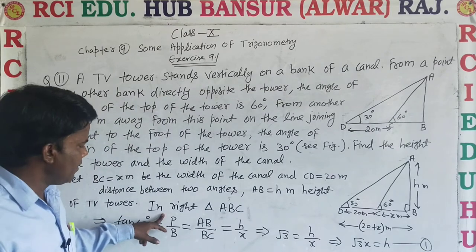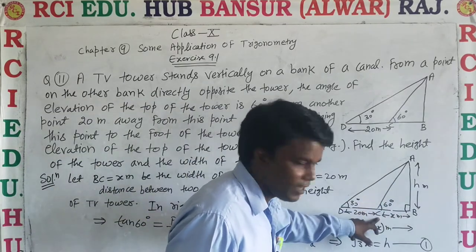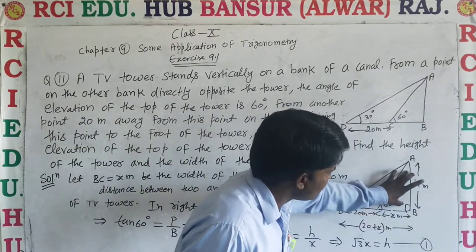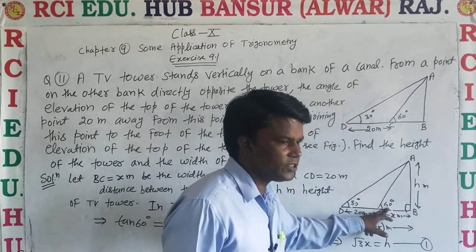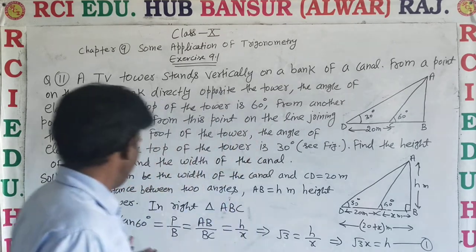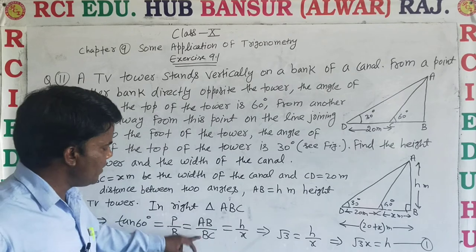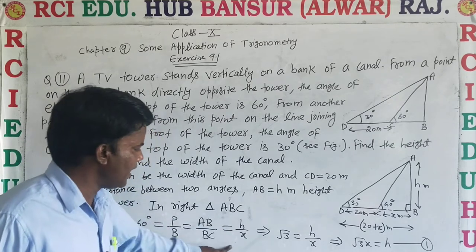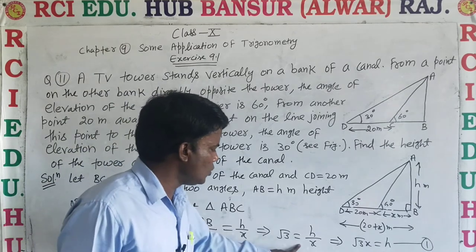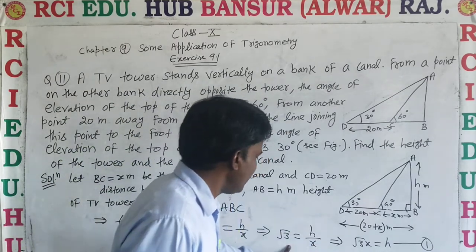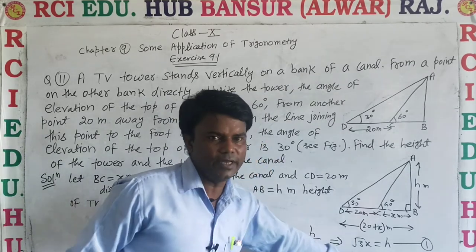First, take right triangle ABC. Here, AB is perpendicular and BC is base, with angle 60 degrees. Then tan 60 equals perpendicular upon base, AB upon BC equals H upon X. The value of tan 60 is root 3, so root 3 equals H upon X. After cross multiplication, X into root 3 equals H. This is equation 1.